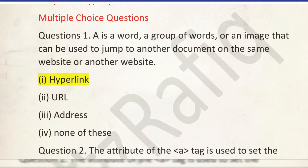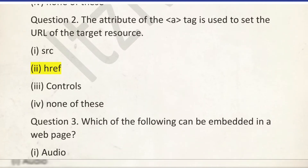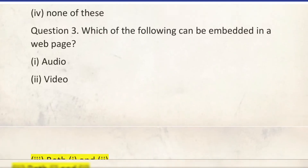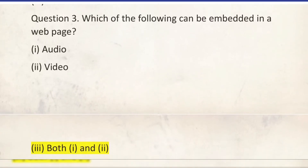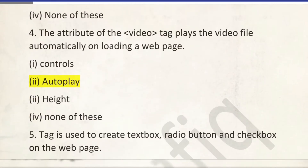I'm just scrolling the page, please take a screenshot or read the question yourself, otherwise the video will be too long. Number 2: the attribute of the 'a' tag used to set the URL of the target resource — it will be href. Number 3: which of the following can be embedded as a web page in a web page — both 1 and 2. Number 4.